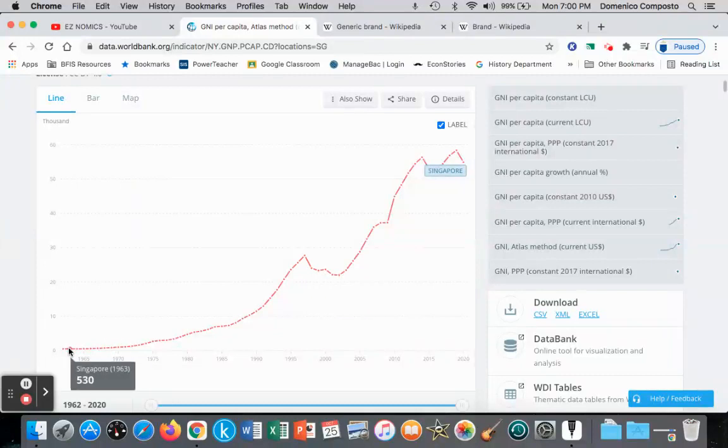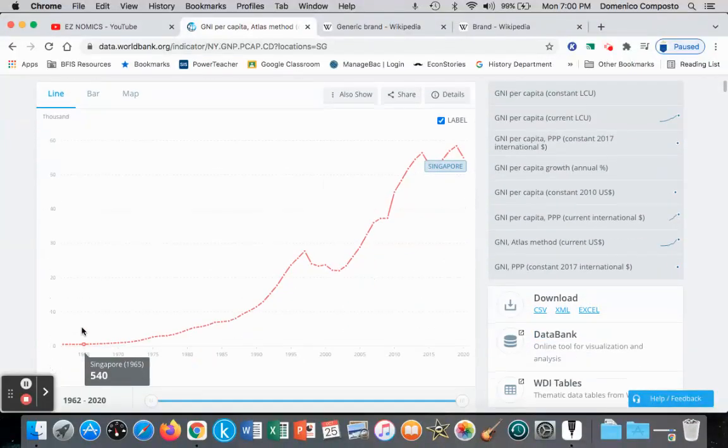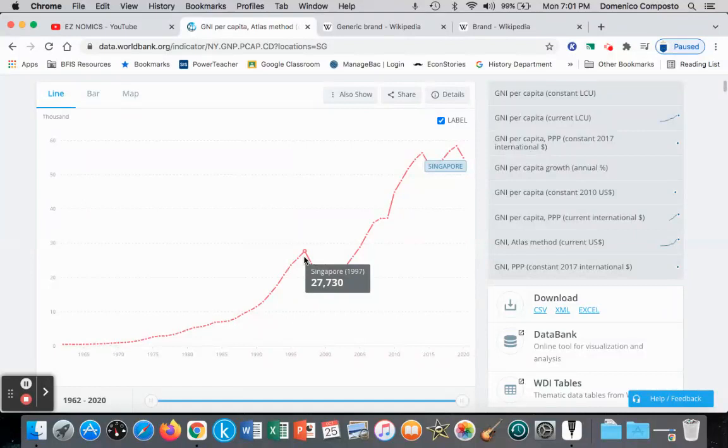In that previous video, we saw that in 1963 gross national income in Singapore was about $530 per person per year household income on average. And it rose over time due to their investments in education, a long-run investment, and it rose to $27,730 in 1997. And so in that previous video, we saw as incomes rise, what's the impact on the demand for normal and inferior goods. In this video, let's look at what happens when incomes fall.